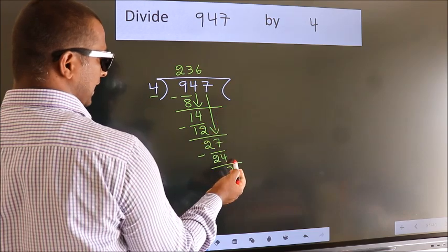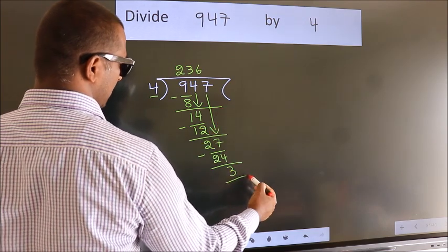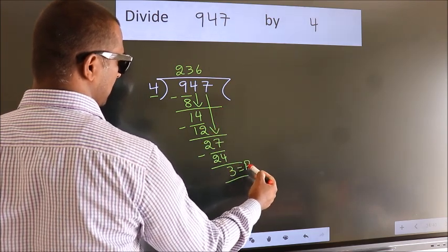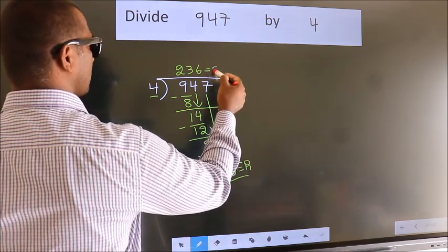No more numbers to bring it down. So we stop here. This is our remainder. This is our quotient.